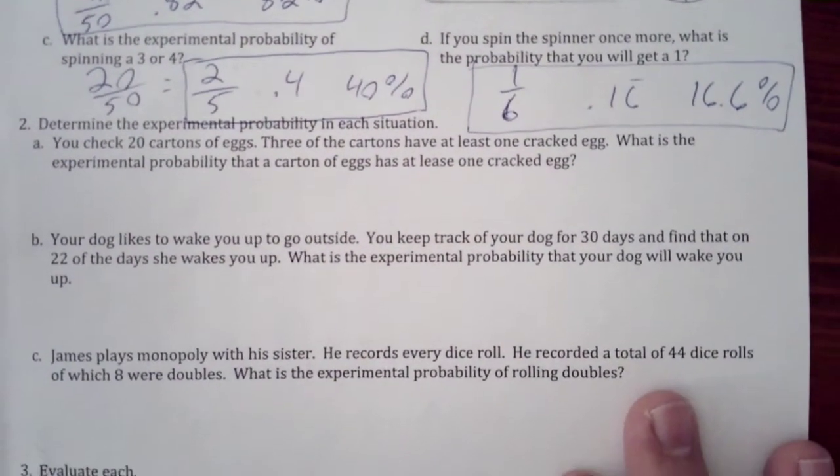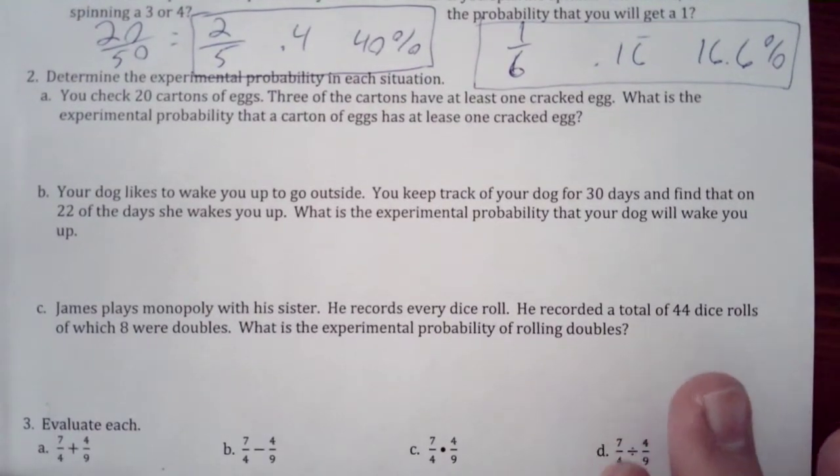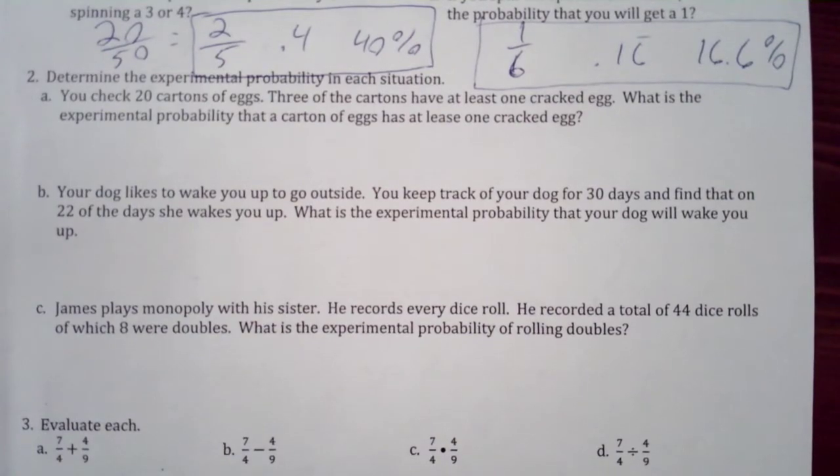Part number two: Determine the experimental probability in each situation. You check 20 cartons of eggs. Three of the cartons have at least one cracked egg. What is the experimental probability that the carton of eggs has at least one cracked egg?